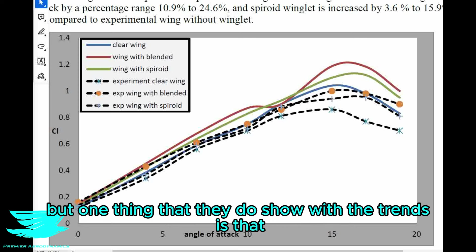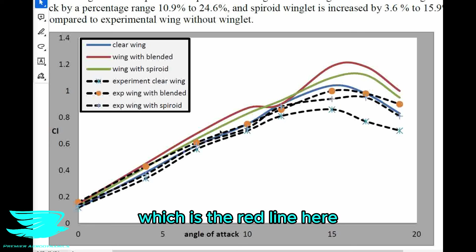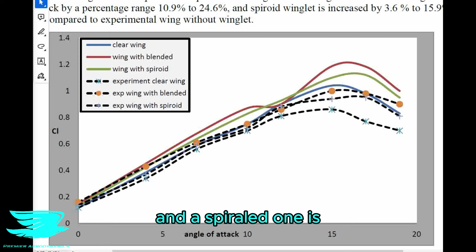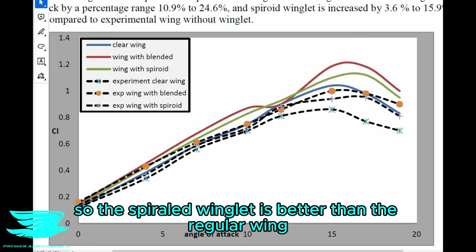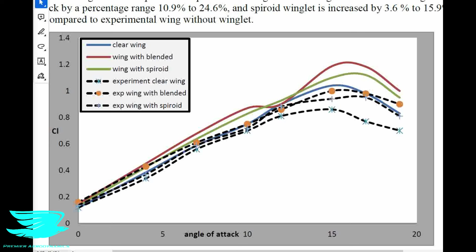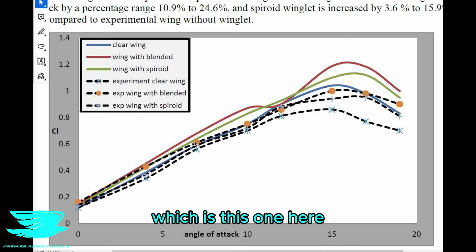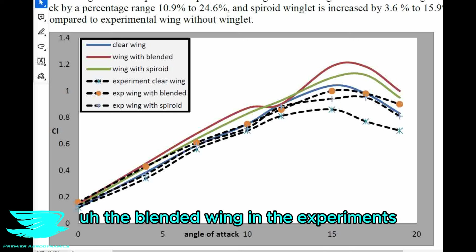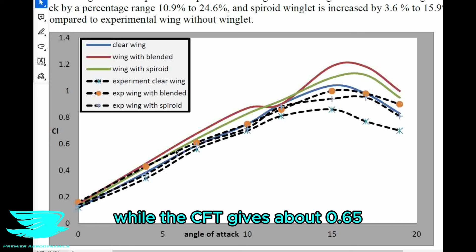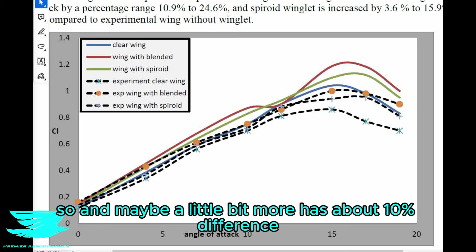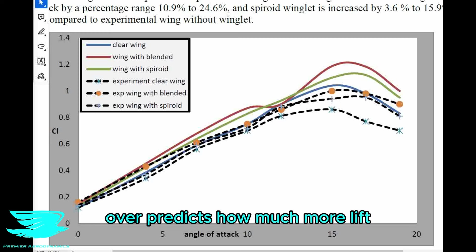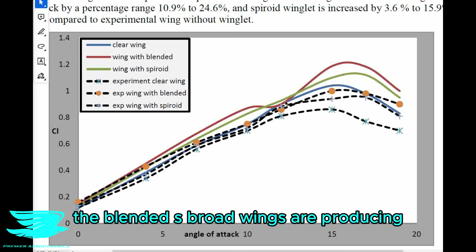One thing the trends do show is that the wing with the conventional blended winglet produces much more lift than the other two wings, and the spiraled one is even more than the planar wing as well. So the spiraled winglet is better than the regular wing, and the blended winglet is even better than the spiraled wing. But the values found here are way off. For example, at an angle of attack of 7 degrees, the blended wing in the experiments produces a lift coefficient of about 0.6 while the CFD gives about 0.65 — that's about a 10% difference. The CFD clearly overpredicts how much more lift the blended and spiraled wings produce compared to the experiments.